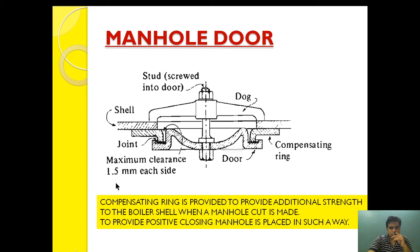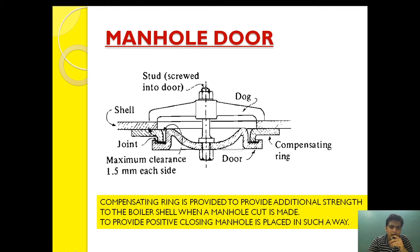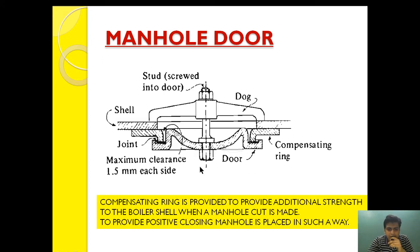For that reason, a compensating ring is provided in a manhole door, which is welded. As you can see, this is the inside of the boiler and this is the outside. The compensating ring is cut here. Now, the second thing is this is the manhole door, these are the long nut studs, and this is the dog nut which is holding the manhole. As the door is elliptical, to ensure positive closing, it is closed from the inside direction so that the pressure building up also helps the positive closing of the manhole door.